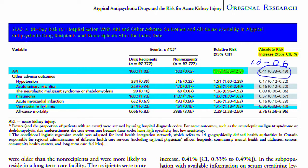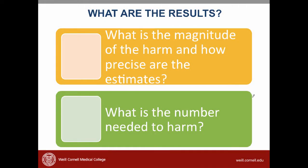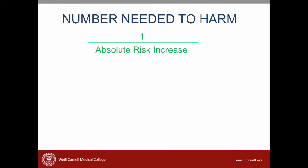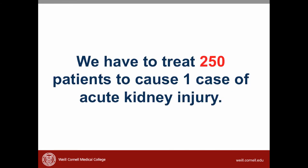Let's go back to our process list to see what else we can do to interpret the results. The second question is: what is the number needed to harm? That is, how many patients need to receive an atypical antipsychotic in order to harm one patient? The number needed to harm is very similar to the number needed to treat from articles about therapy. The calculation is simply 1 over the absolute risk increase expressed as a decimal — so for this study it's 1 over 0.004, which equals 250 patients. In real-life language, we have to treat 250 patients to cause one case of acute kidney injury.